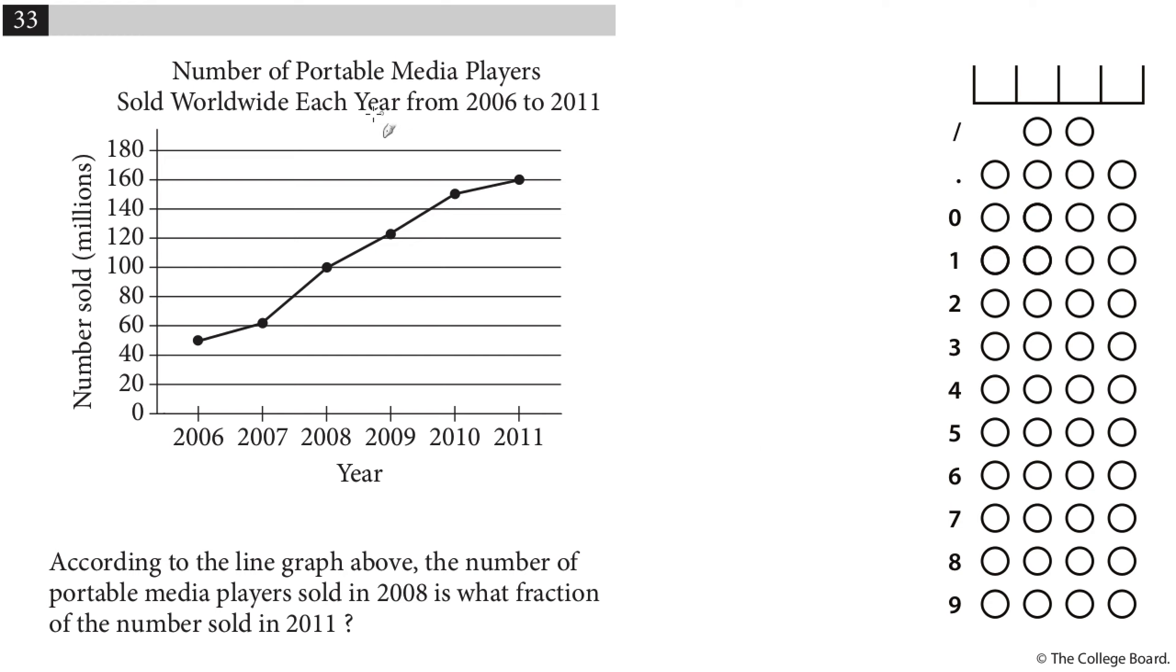Alright. So here we have a number of portable media players sold worldwide each year from 2006 to 2011. According to the line graph above, the number of portable media players sold in 2008 is what fraction of that sold in 2011. So basically, I'm going to look at 2008. So 2008 is 100 million. I'll put 100, it's going to be good enough for this. I don't need to include the million. 2011 is going to be 160 million.